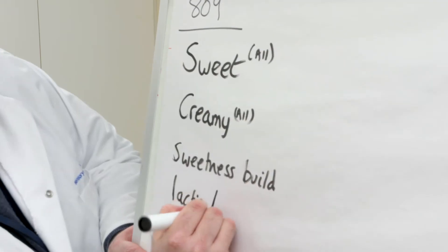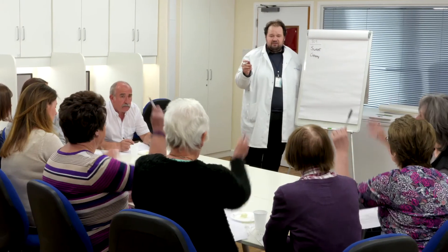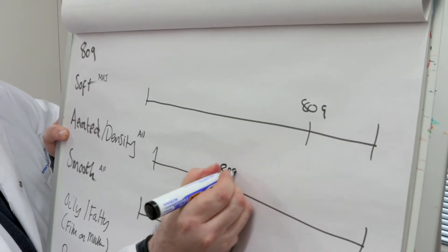Once we've selected the panellists, the next stage is a discussion stage where we generate the vocabulary that describes all the differences between the products under test. Once those have been generated, they are discussed as a group, and they come to a consensus agreement as to which terms should be used, and also a definition that they will agree on. It's really important that everyone has the same understanding of each of the terms.